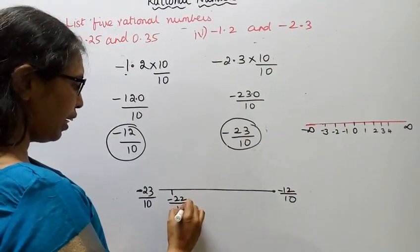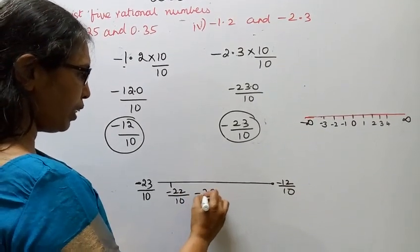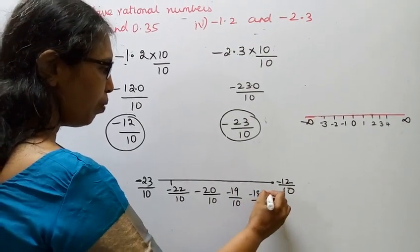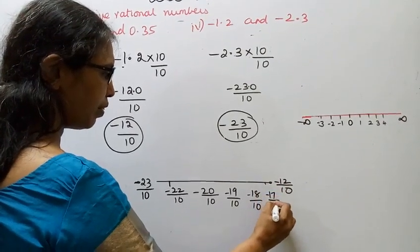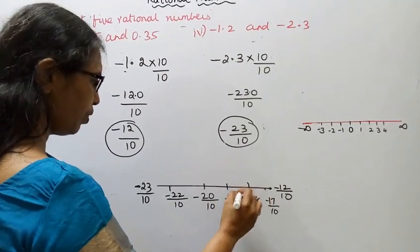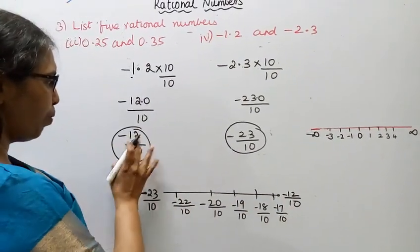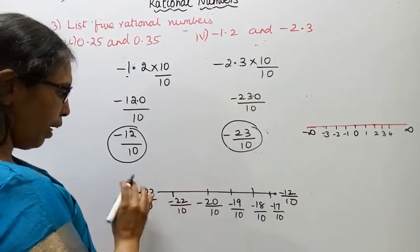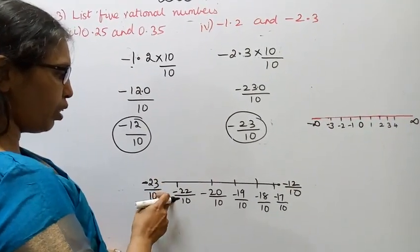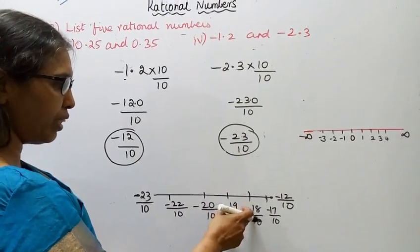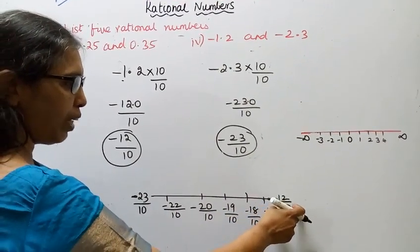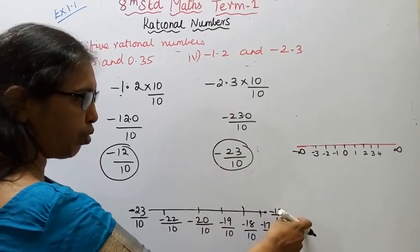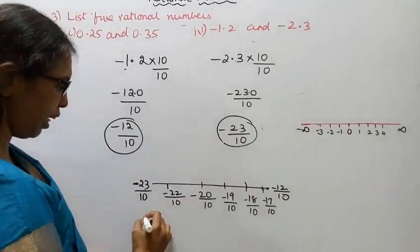On the number line, the values between minus 23 by 10 and minus 12 by 10 include: minus 22 by 10, minus 21 by 10, minus 20 by 10, minus 19 by 10, minus 18 by 10, minus 17 by 10, minus 16 by 10, minus 15 by 10, minus 14 by 10, and minus 13 by 10.